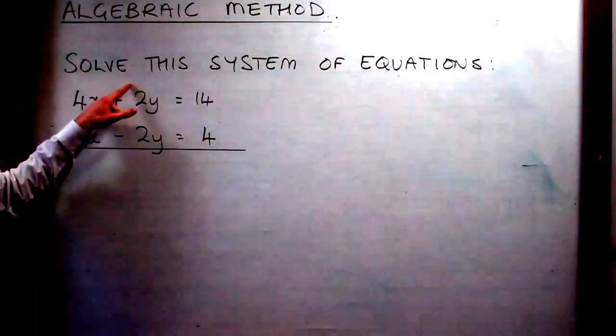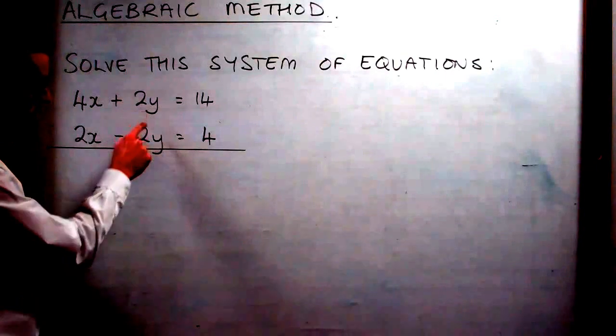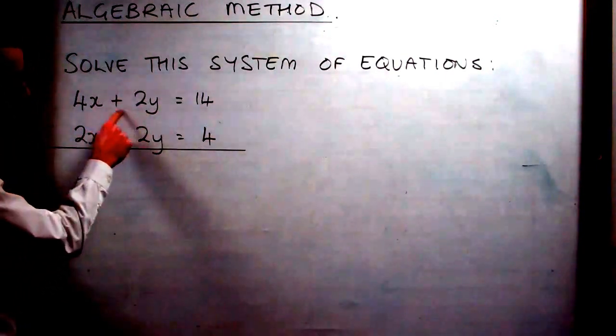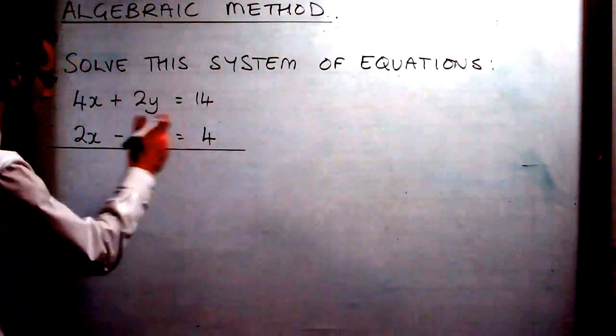Now in order for this to eliminate, if we look at the same number, the same coefficient of 2 before the y in both cases. But in this case, it's plus 2y and in this case it's minus 2y. Watch this. This is clever.